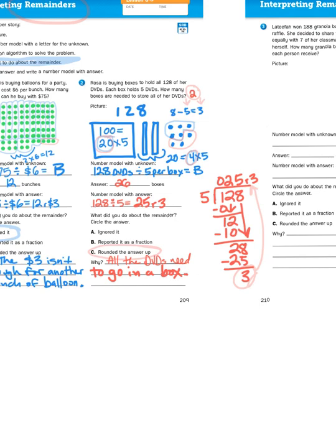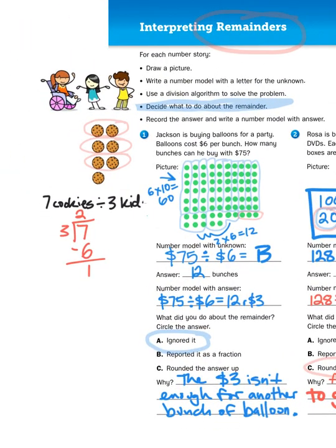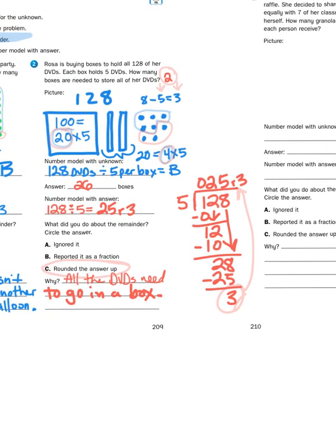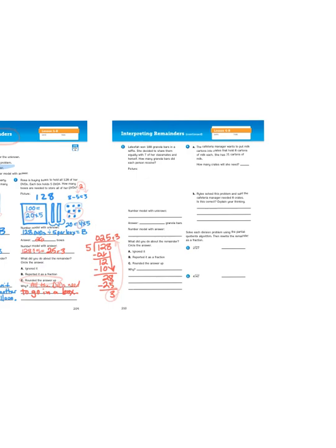And that's what we mean by interpreting remainders. We need to figure out what to do with the leftovers. Sometimes, we just put it aside like we did with the money here, or with the cookies. Sometimes, we have to round up to the next full number for our quotient because having leftovers becomes a problem. So try these division problems. You're going to get a remainder, and then you just have to ask yourself, what should I do with the leftovers?